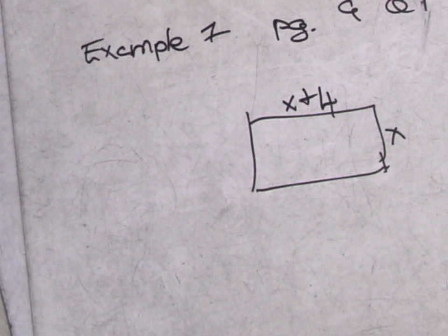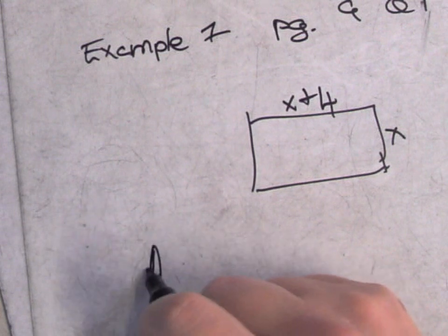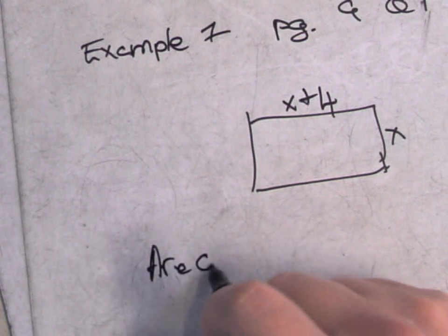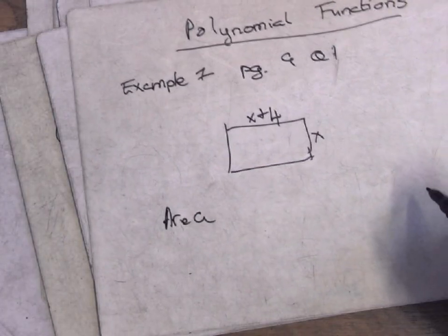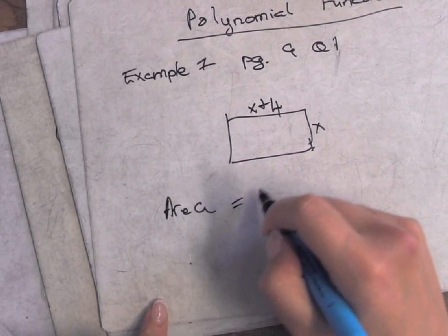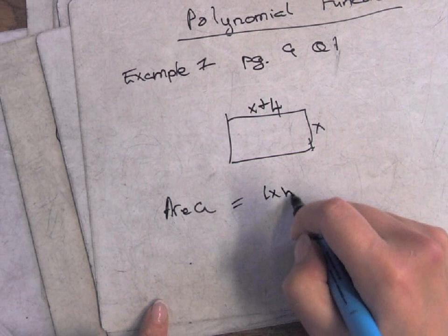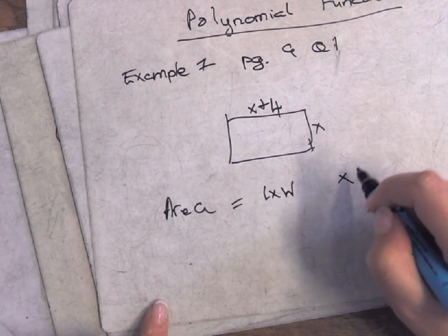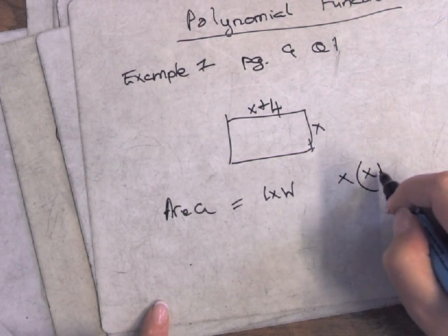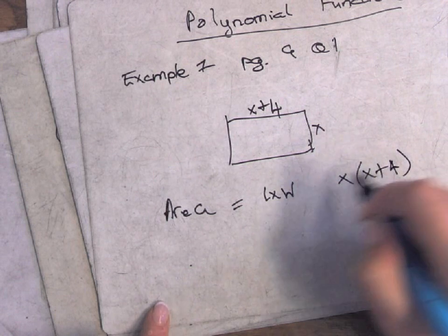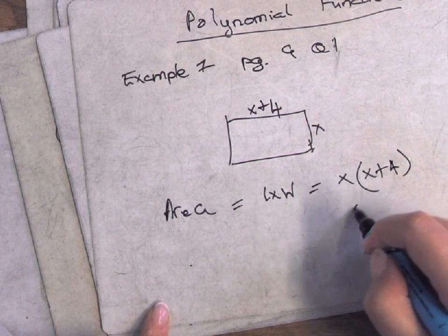Find an expression for the area. So just find an expression for the area. Okay, so how to get the area of a rectangle? Length by width. So it's x multiplied by x plus four.